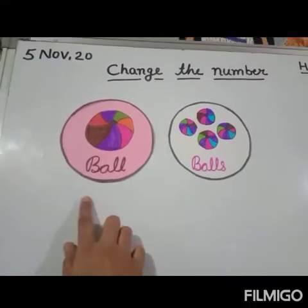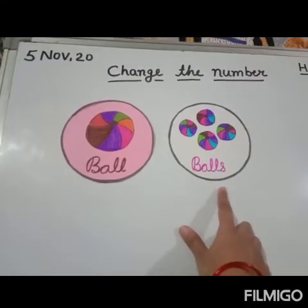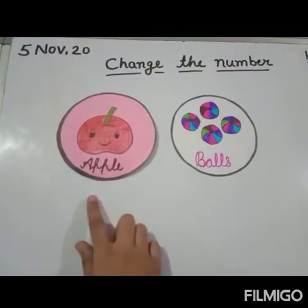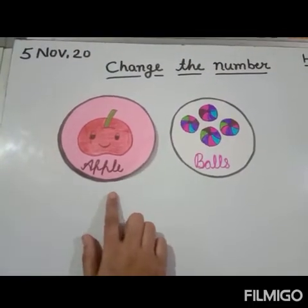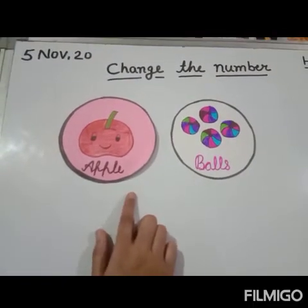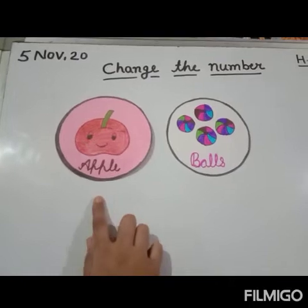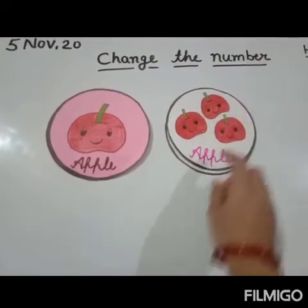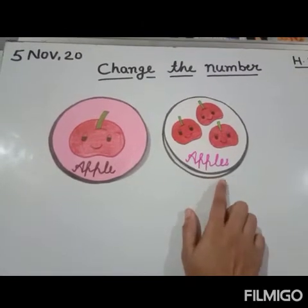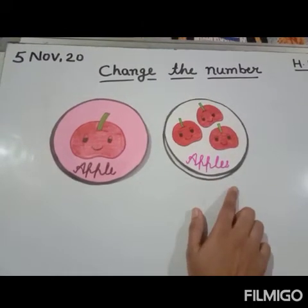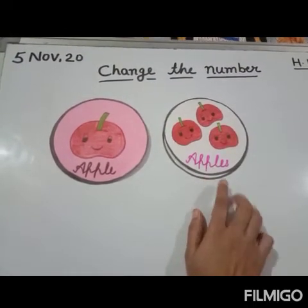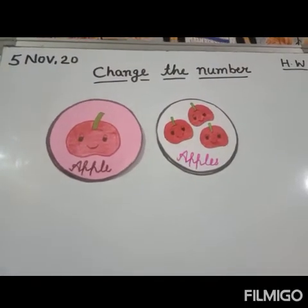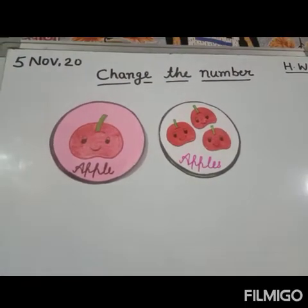Ball, balls. Okay, next is apple — A-double P-L-E. Apple means सेब (fruit), and when there are many, we say apples — A-double P-L-E-S. These are simple number changes where only S is added at the end. Okay?